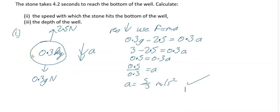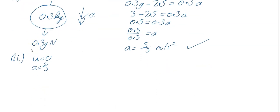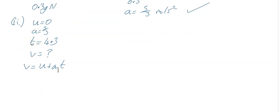The next part of the question says the stone takes 4.2 seconds to reach the bottom of the well. Calculate the speed with which the stone hits the bottom of the well. So what we know, if it is dropped your initial velocity is 0. Your acceleration we know is 5 over 3. We also know in this question your time is 4.3, and what you've got to find is your V. So we're going to use V is equal to U plus At, and then just go with this and see what we get. So V is equal to 0 plus 5 over 3 times your T which is 4.3.